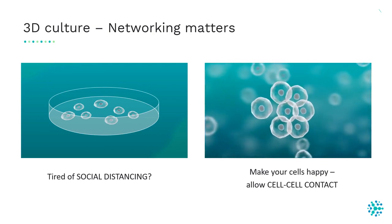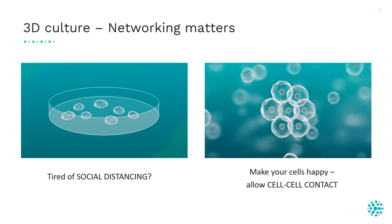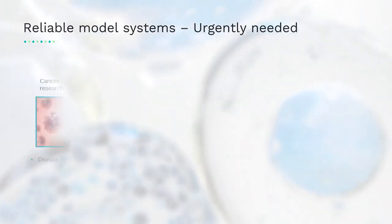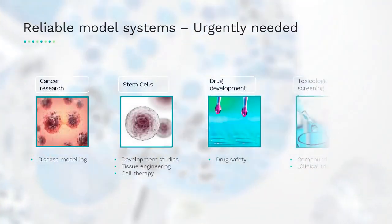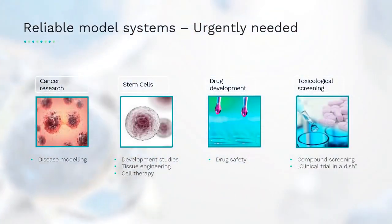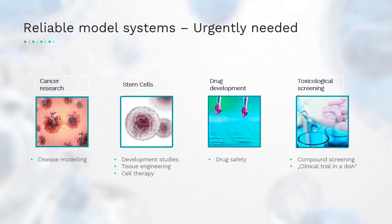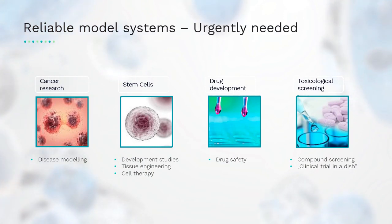Reliable model systems are urgently needed. For example, around 10 million people die due to cancer per year. Model systems allow us to model diseases, gain new insights about their origin, and help find new drugs to decrease the number of deaths. The COVID-19 situation also taught us the importance of fast drug development and reinforced the role of model systems in fighting infectious diseases.